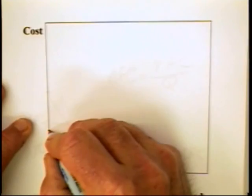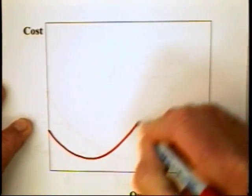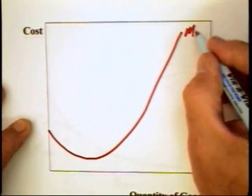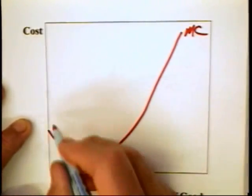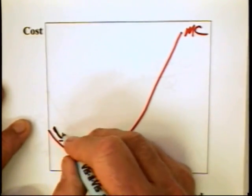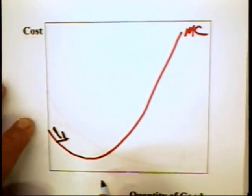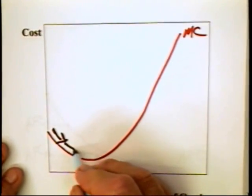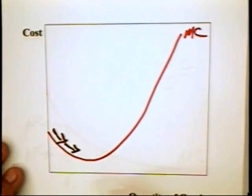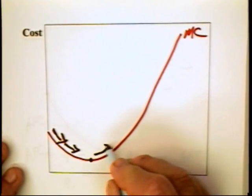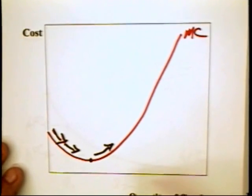First off, we said that the marginal cost curve looks something like this. That is, there is a range in which you have the benefits of increasing specialization of labor, and that means that the marginal cost of production can be going down, but there is some minimum after which the law of diminishing marginal returns kick in.